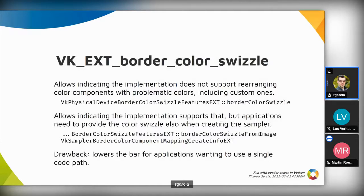That's basically how the Border Color Swizzle extension was created last year. Custom colors with non-identity swizzles produce undefined results unless the Border Color Swizzle feature is available and enabled. Some implementations can advertise support for this almost for free, others can advertise lack of support. In the middle ground, some implementations can indicate support for this case but the component swizzle has to be indicated when creating the sampler as well as the image view — samplers created this way can only be used with image views that have a matching component swizzle.